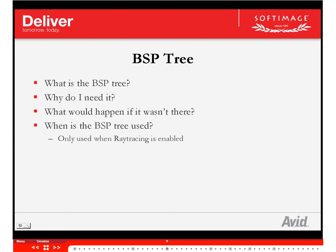For example, if we set the antialiasing level at something like 3.3, that means there are going to be 64 subpixels inside the pixel. So the scene will be tested 64 times for a given pixel, and each of those rays being cast is going to test a million triangles. That's pretty inefficient doing it this way.